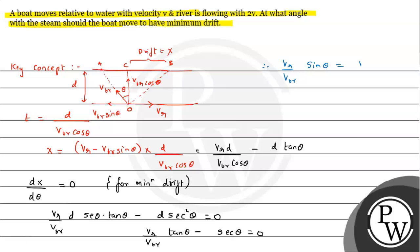Now applying this to the given question: velocity of boat relative to water is v_br = v, and the river velocity v_r = 2v. Plugging in: 2v / v · sin θ = 1, so 2·sin θ = 1, giving sin θ = 1/2, and therefore θ = sin⁻¹(1/2) = 30°.